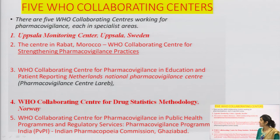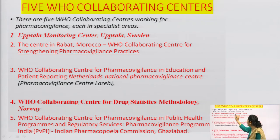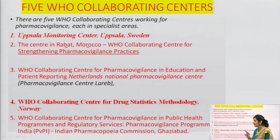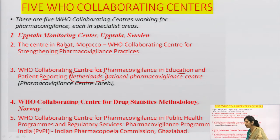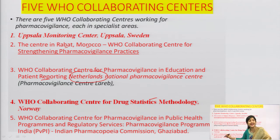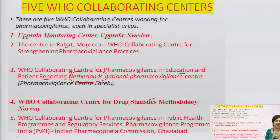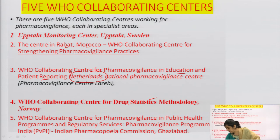There are 5 WHO Collaborating Centres working for pharmacovigilance, each in a specialist area. The first is Uppsala Monitoring Centre, Uppsala, Sweden. The second centre is in Rabat, Morocco, Africa, for strengthening pharmacovigilance practices. The third is the WHO Collaborating Centre for pharmacovigilance in education and patient reporting, in the Netherlands — the Netherlands National Pharmacovigilance Centre, also called LAREB. The fourth is the WHO Collaborating Centre for drug statistics methodology in Norway. The fifth is India's centre — WHO Collaborating Centre for pharmacovigilance in public health programs and regulatory services, which is the Pharmacovigilance Programme of India, PVPI, overseen by the Indian Pharmacopoeia Commission, Ghaziabad.